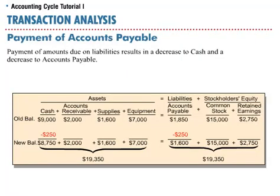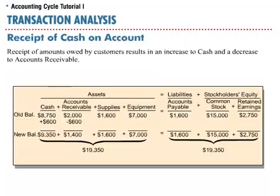SoftBite pays its Daily News advertising bill of $250 in cash. This results in a decrease to cash of $250 and a decrease to accounts payable of $250. SoftBite then receives $600 in cash from customers that it had previously billed, resulting in an increase to cash of $600 and a decrease to accounts receivable of $600.